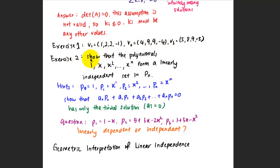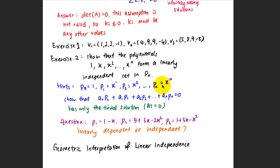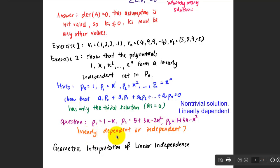The second exercise is that you can use linear independence to check polynomials as well. Imagine you have polynomials 1, x, x², up to xⁿ forming a linear independence set. Let p0=1, p1=x, p2=x², and so on. You have to show that scalar multiples of these components summed together give the zero vector, and that only the trivial solution exists for p0, p1, p2, ..., pn to be linearly independent. For the given p1, p2, and p3, check whether they are linearly dependent or independent.